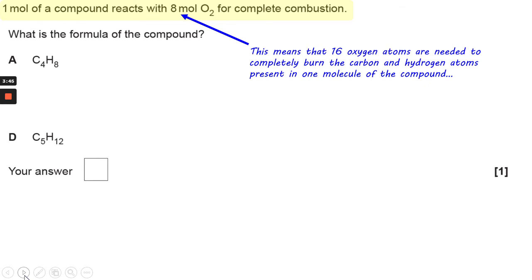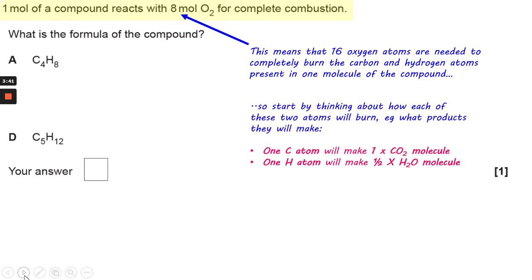So if we wipe out B and C, just think about A and D. The next thing to consider is how much the carbon and hydrogen will make. Carbon will make carbon dioxide, hydrogen will make water when it burns completely. One hydrogen atom will make half an H2O molecule, because there are two hydrogen atoms in an H2O molecule, and one carbon atom will make one full CO2 molecule.